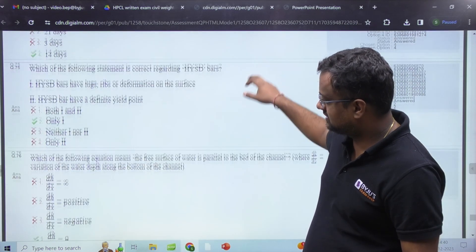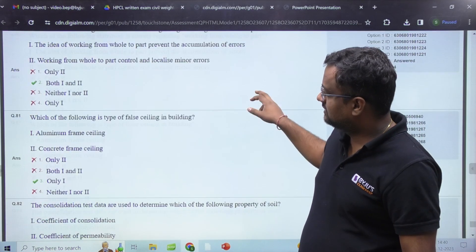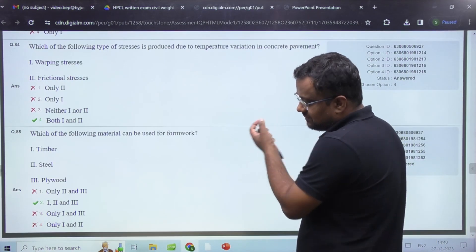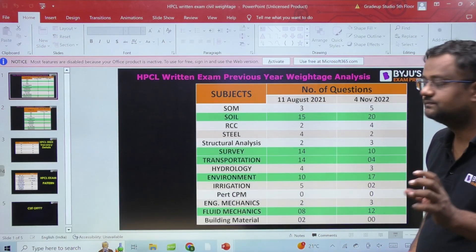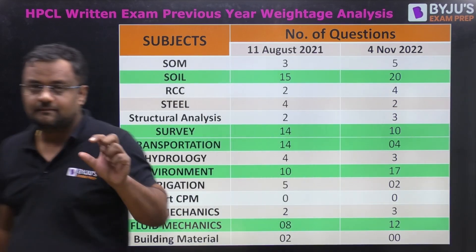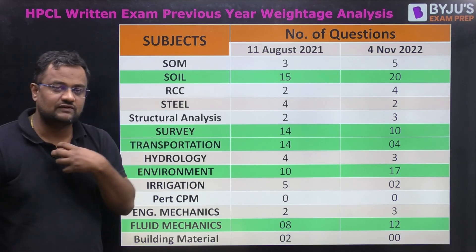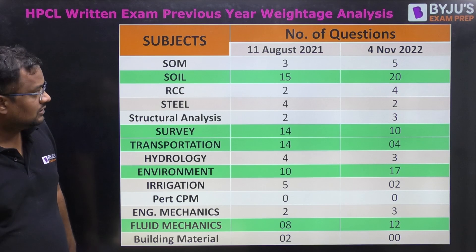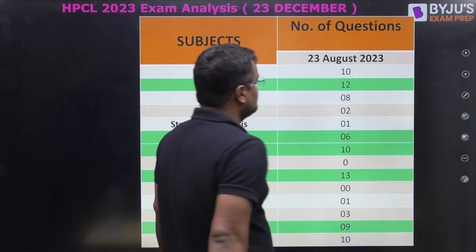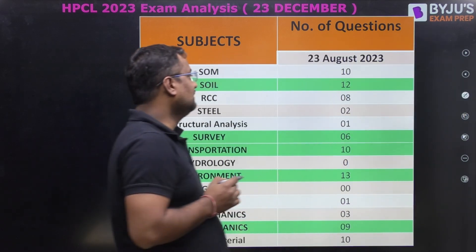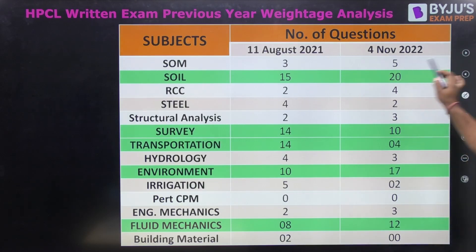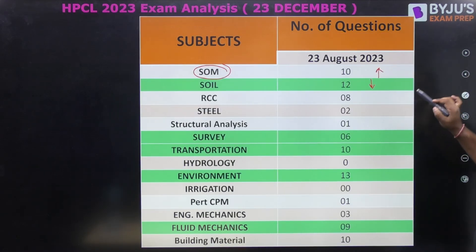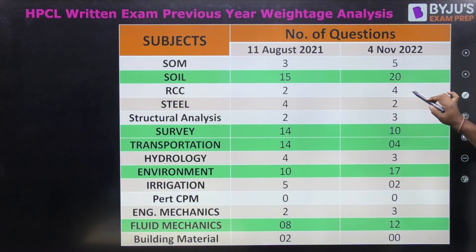So there are 85 technical questions in total. The number of questions is more but the length per question is not long. Looking at the 2023 paper analysis alongside 2021 and 2022 — you can pause the video to review those historical figures. This year, the weightage of strength of materials has been increased — earlier it was 3 to 5 questions but now it is 10. Soil mechanics weightage was earlier 15 to 20 but is now slightly reduced. RCC weightage in 2021-22 was 2 to 4 questions but now it is 8.